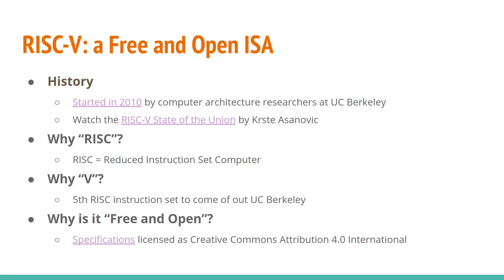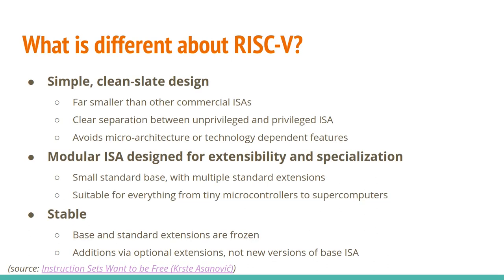RISC stands for reduced instruction set computer. This concept in computer architecture goes back to the early 80s and has become quite dominant — for example ARM is a RISC instruction set. The V or 5 is because this is the fifth instruction set to come out of UC Berkeley. The RISC-V specifications are licensed under the Creative Commons attribution license, which is why we say it's free and open.